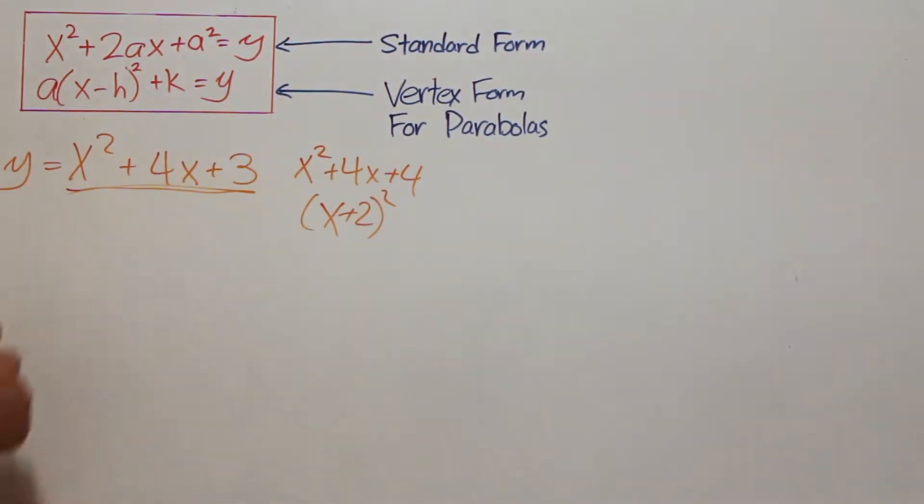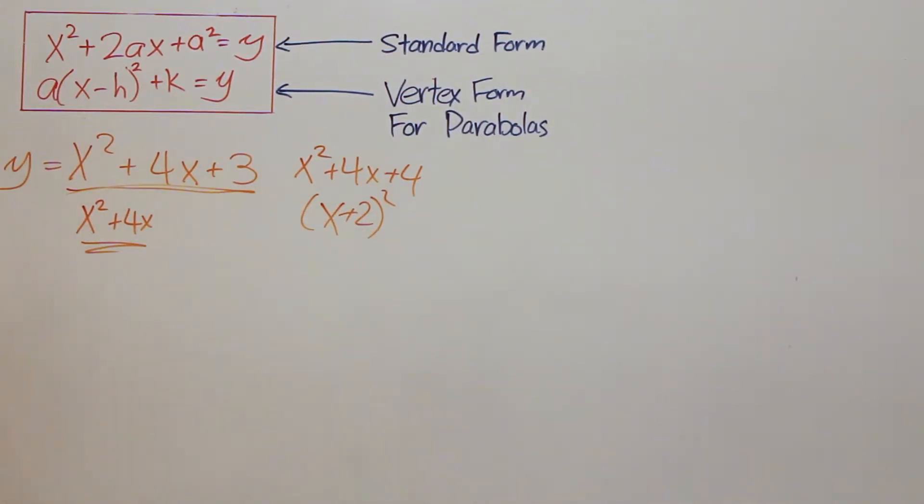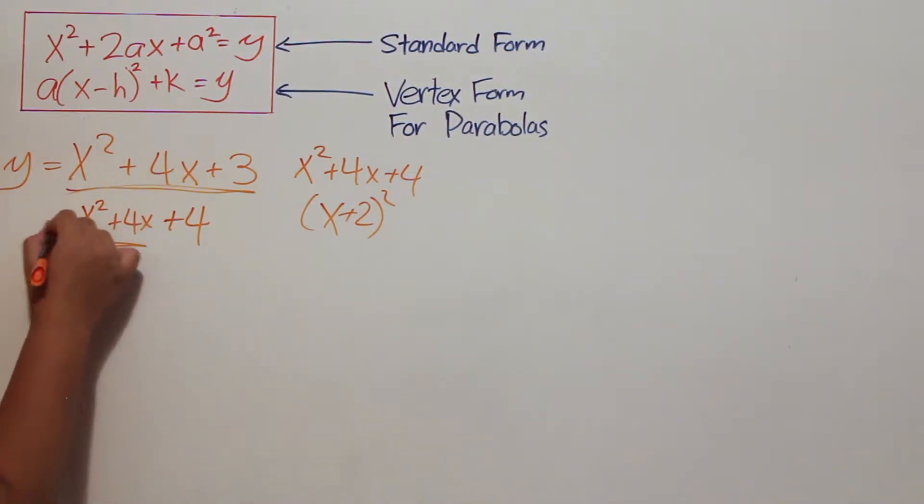However, this is where the vertex form comes in. We can add 4 on both sides to make this the same as x squared plus 4x plus 4, which would simply factor to quantity x plus 2 squared.